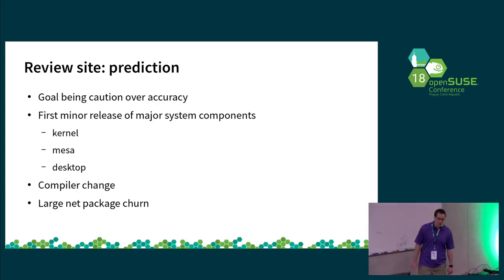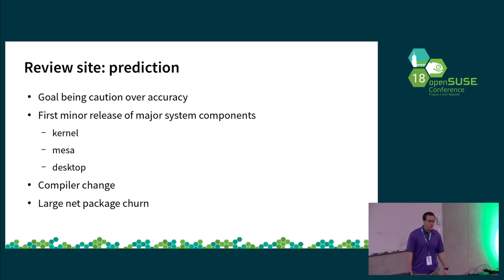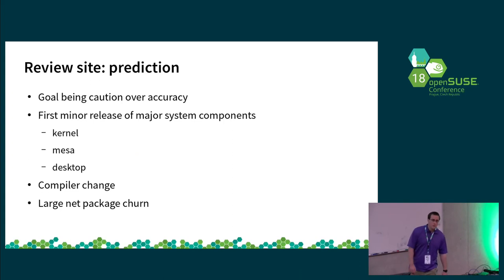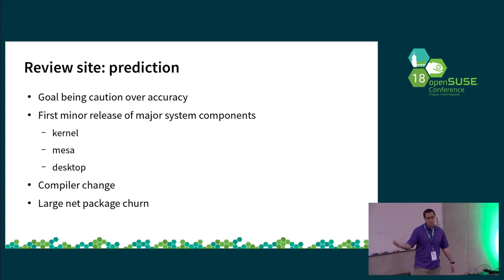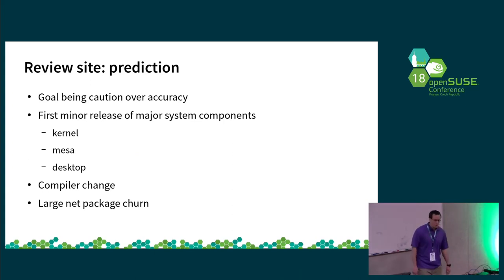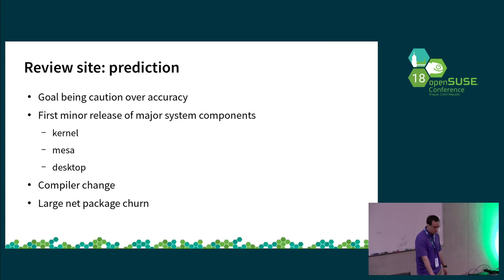The idea behind the predictive score is for users like, for example, my mother who's running Tumbleweed — I don't want to babysit when she updates. The predictive score is overly cautious to avoid anything that has caused issues in the past, so someone like that could simply update to the most stable version of Tumbleweed and may skip 20 or 30 snapshots between updates. Some of the factors that play into this are initial versions of a kernel or Mesa — things that have caused white screens for users — or if the compiler changes, or if there's a large churn where many packages change in one snapshot.